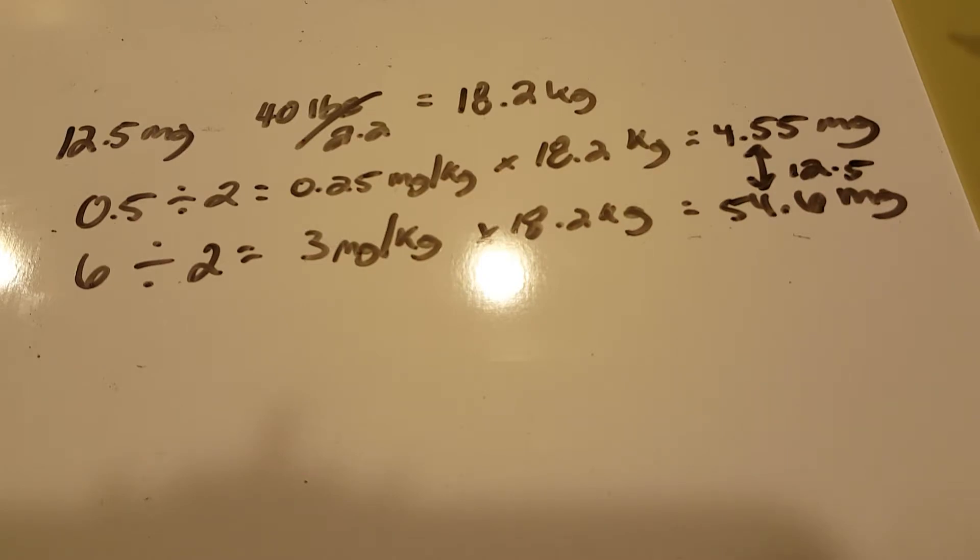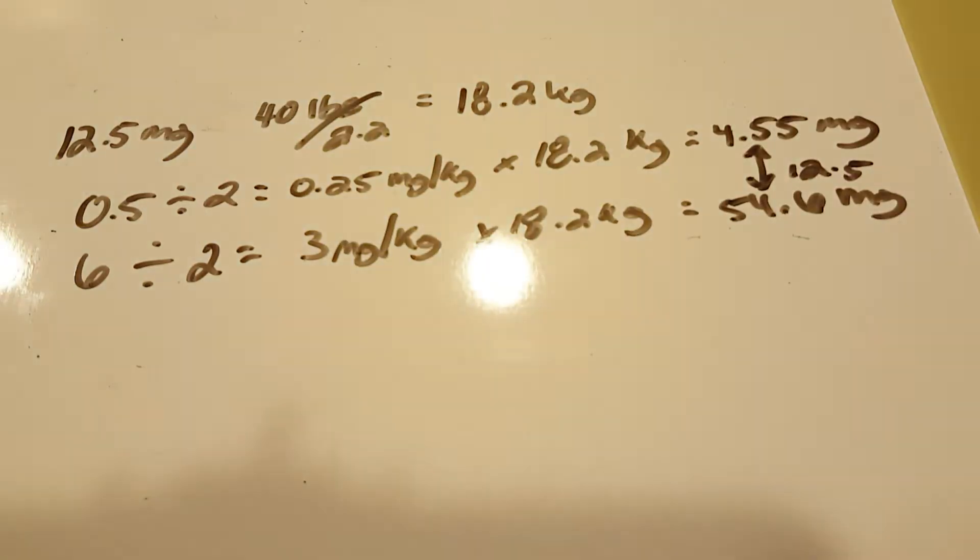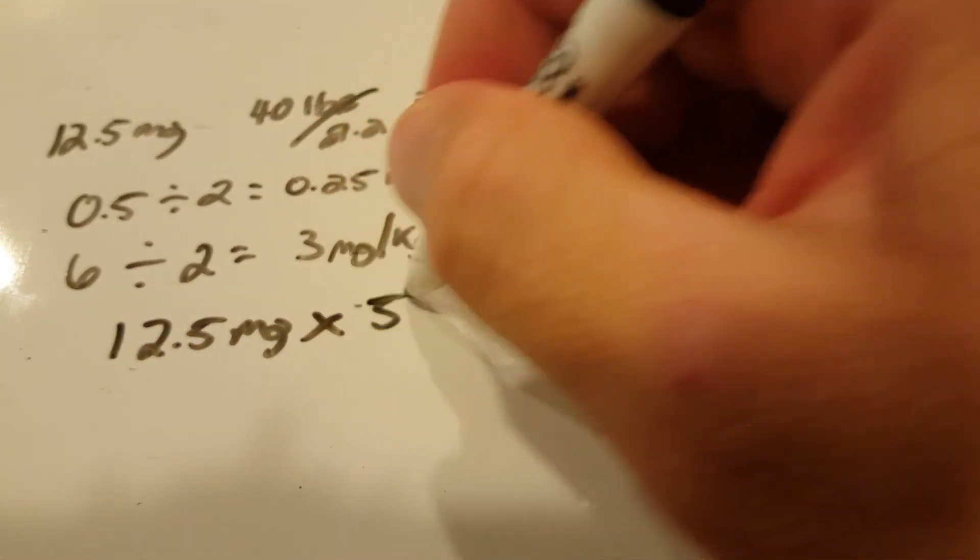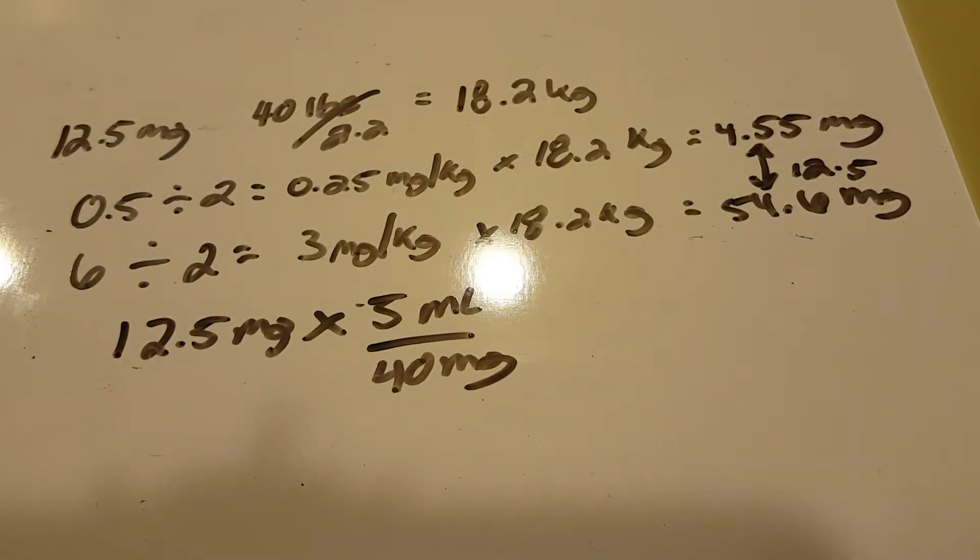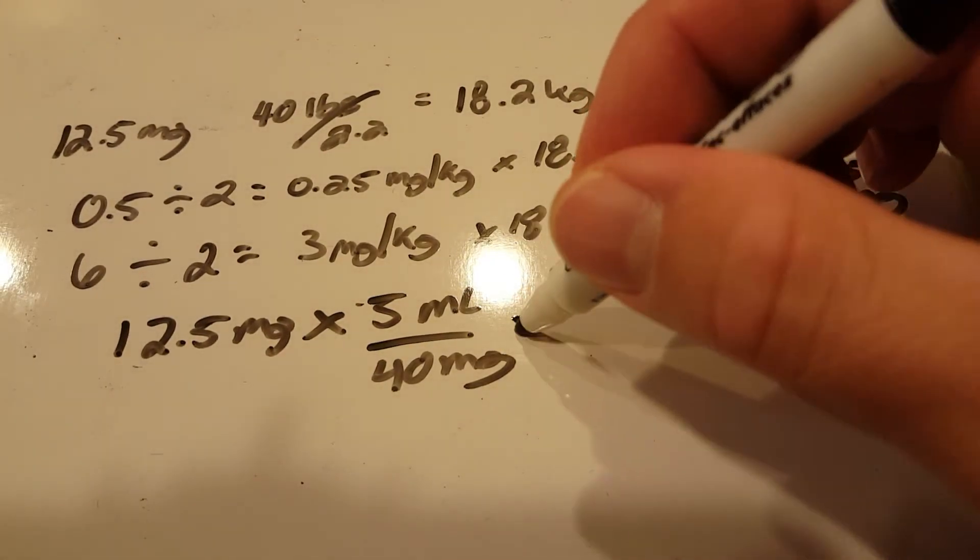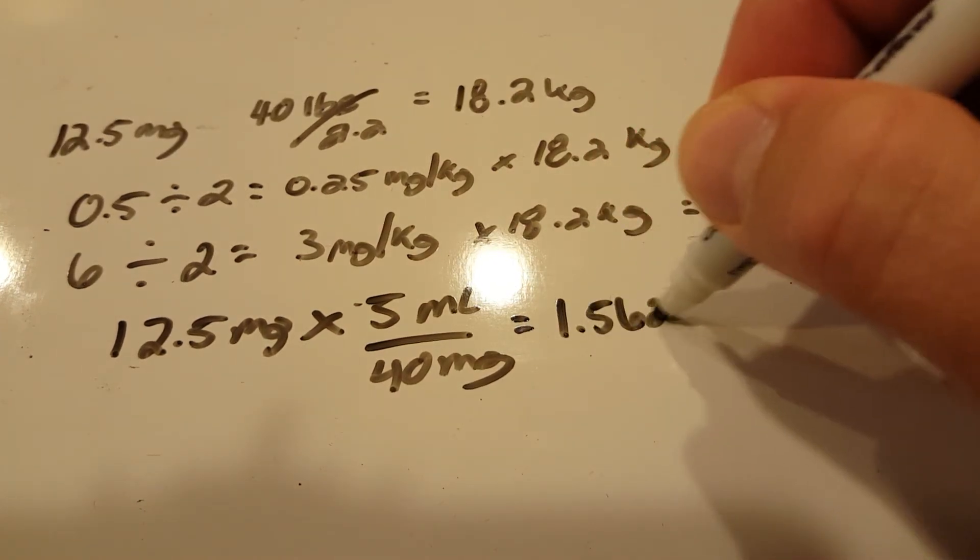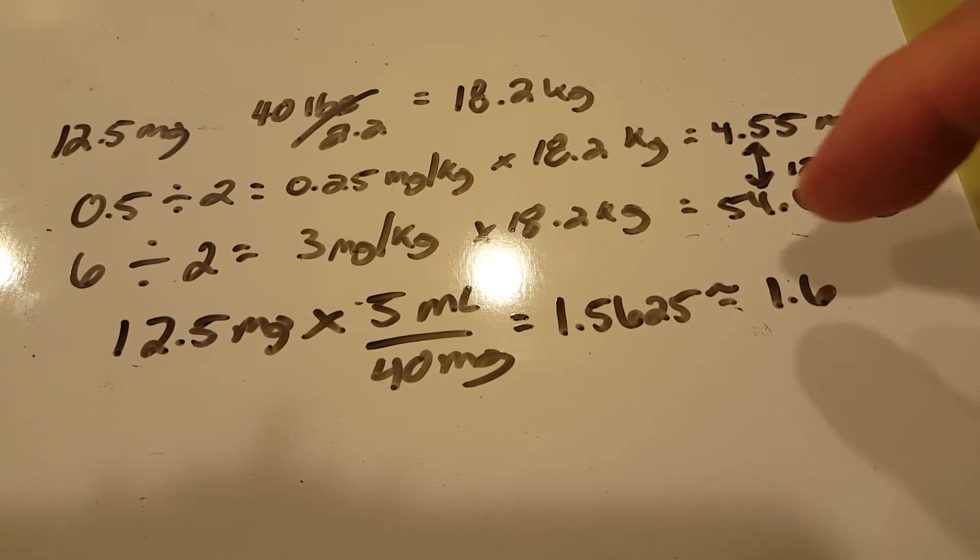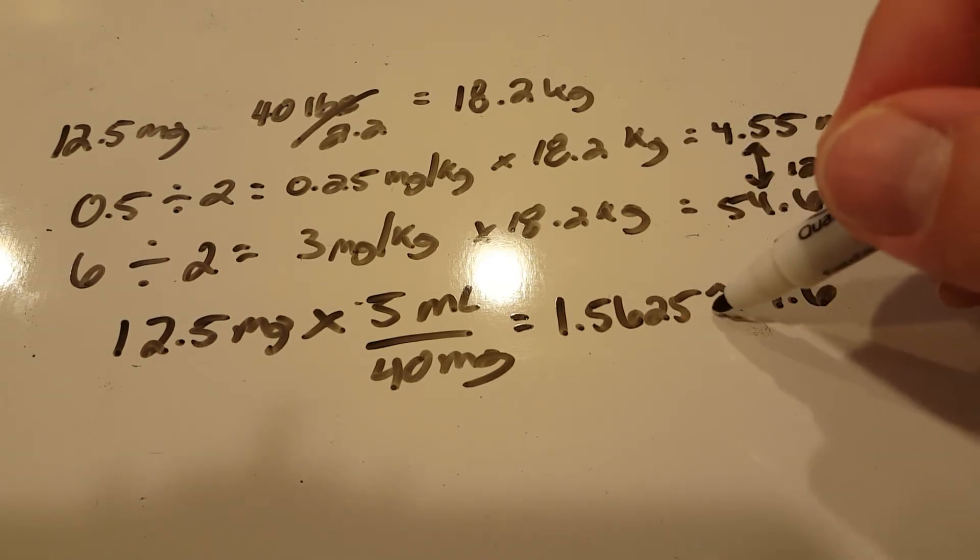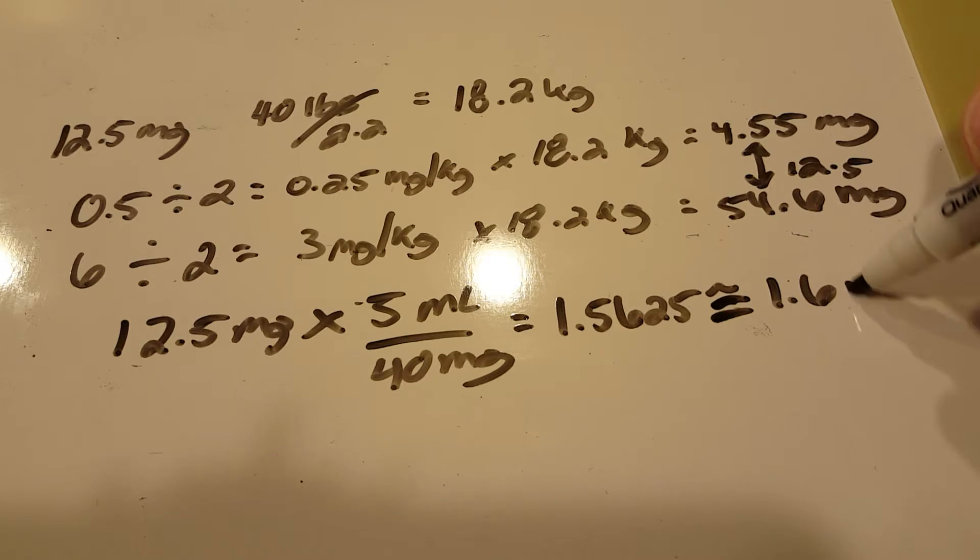So now we just calculate how many milliliters you would administer for the dose. 12.5 milligrams times the 5 ml per 40 milligrams. So 12.5 times 5 divided by 40, and you'll get 1.5625, which we can assume is about 1.6 ml.